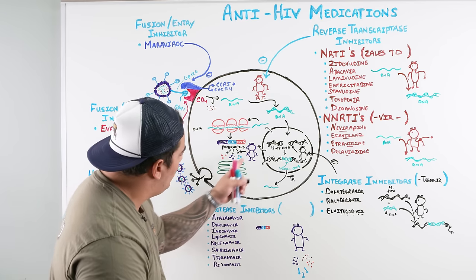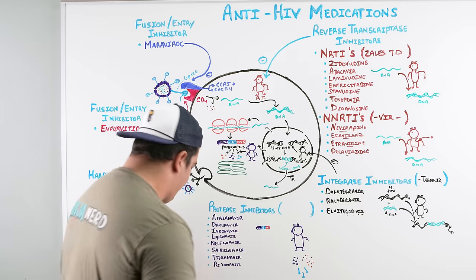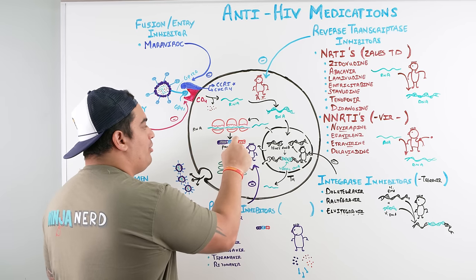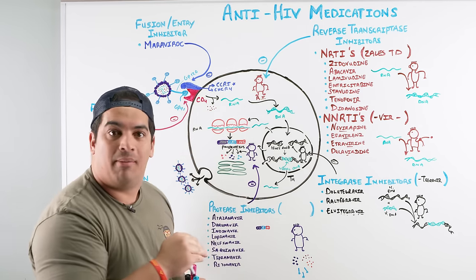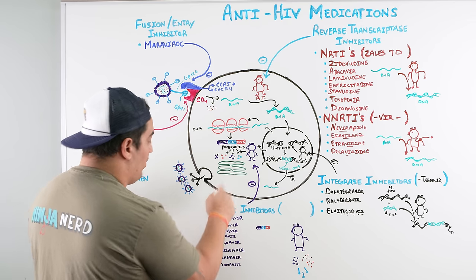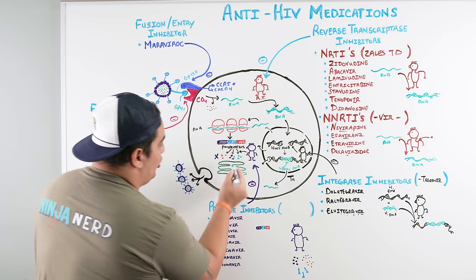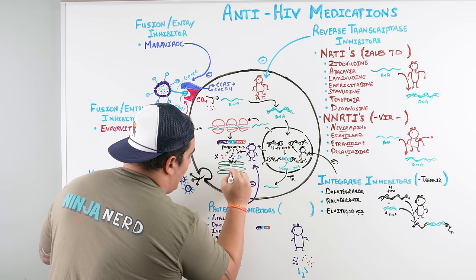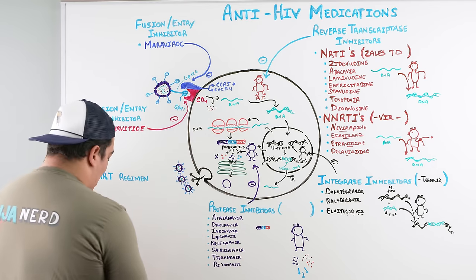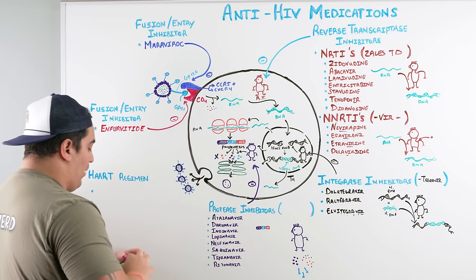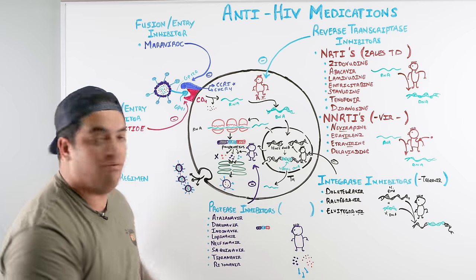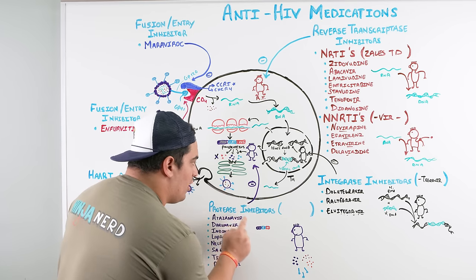Protease inhibitors block protease enzymes from cleaving polyproteins into structural and functional proteins. Without these proteins, the virus cannot form core proteins, enzymes, or surface glycoproteins like gp41 and gp120. This prevents new virus assembly and release from the cell.